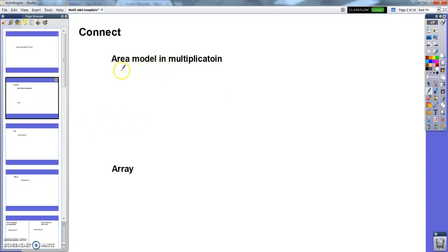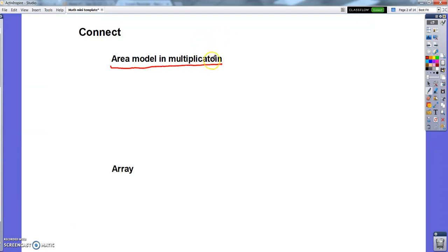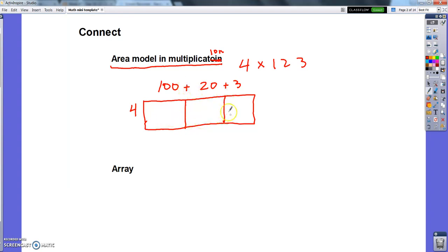You probably have heard the term area model before. I want to make sure I review what an area model in multiplication is. We learned that a little ways back, so that would be something like if I multiply 4 by 123, an area model looked like this. We took that 123 and made it into expanded form, 100 plus 20 plus 3, multiplied it by 4. Then we drew this rectangle and made a section for each part of this expanded form for each place value. We multiplied 4 times 100 was 400, 4 times 20 was 80, 4 times 3 is 12. Then we just added those up: 400, 80, 12, and we got 492.